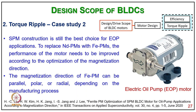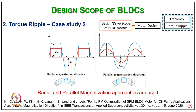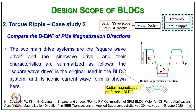The SPM construction is the best choice for EOP (electric oil pump) applications, replacing NDPM with FEPM. The performance of the motor needs to be improved through optimization of magnetization. The magnetization of FEPM can be parallel, polar, or radial depending on the manufacturing process. Both radial and parallel magnetization approaches are used, and the back EMF of PM magnetization directions is compared.